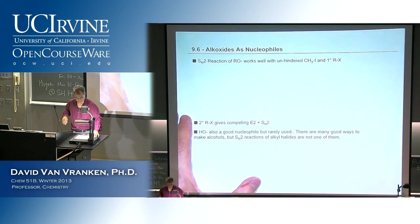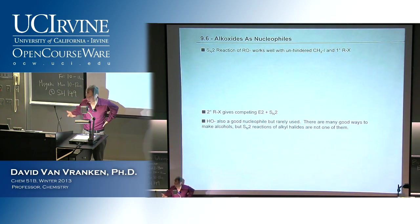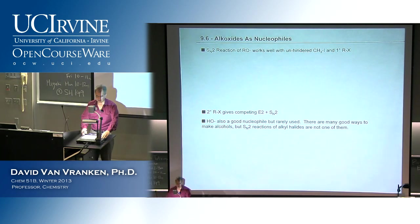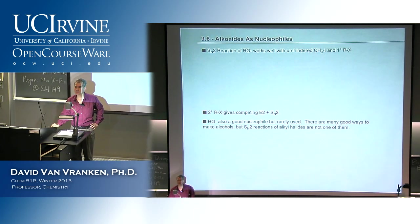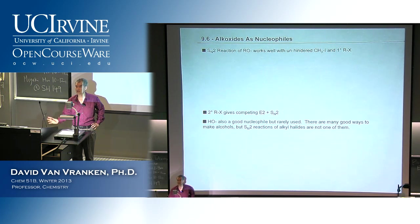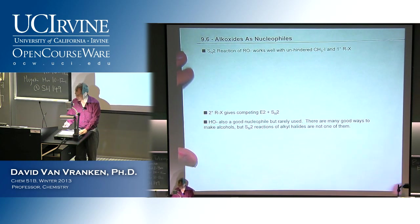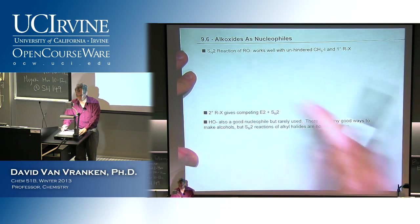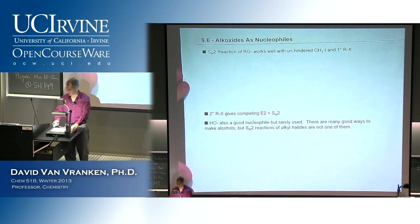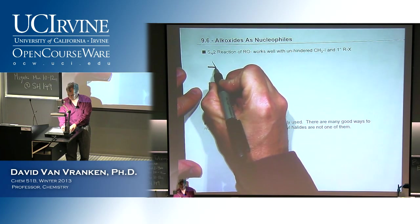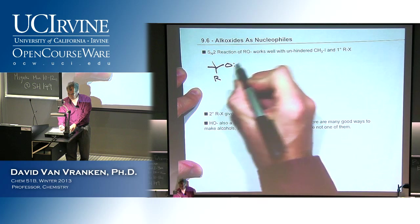Let's talk about some chemistry. A lot of Chapter 9 is basically just reworking stuff from Chapters 7 and 8: SN2 reactions, SN1 reactions, E2 reactions. Let's talk about how you can use oxygen as a nucleophile and how you can make ether molecules by using them as nucleophiles. Let's go through a couple of examples where we use alkoxides as nucleophiles to attack things.